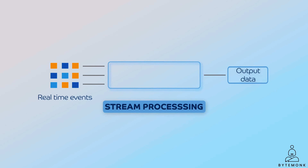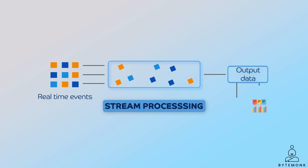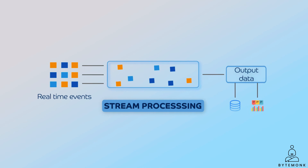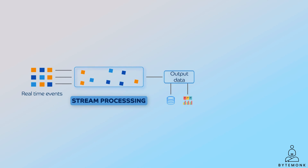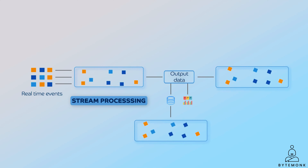It is important to note that the ingestion, processing, and output stages of a stream processor can overlap. For example, a stream processor may start processing data as soon as it is ingested without waiting for all the data to be collected. Additionally, a stream processor may output data to multiple destinations simultaneously. In fact, other stream processors are often important downstream consumers. Networks of stream processors, each with their own well-defined responsibility, are very robust systems and are easily extensible.